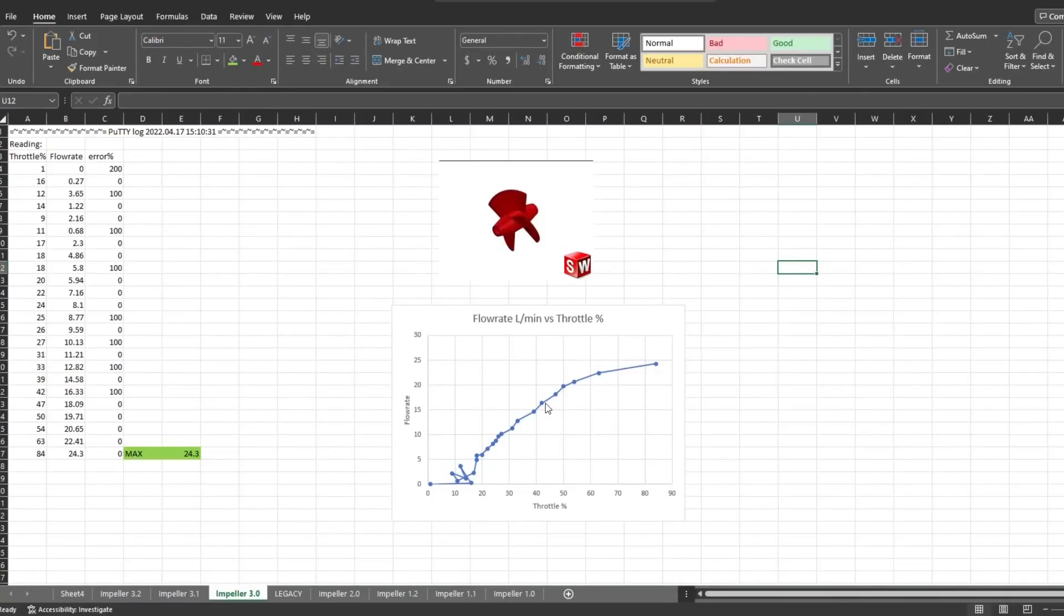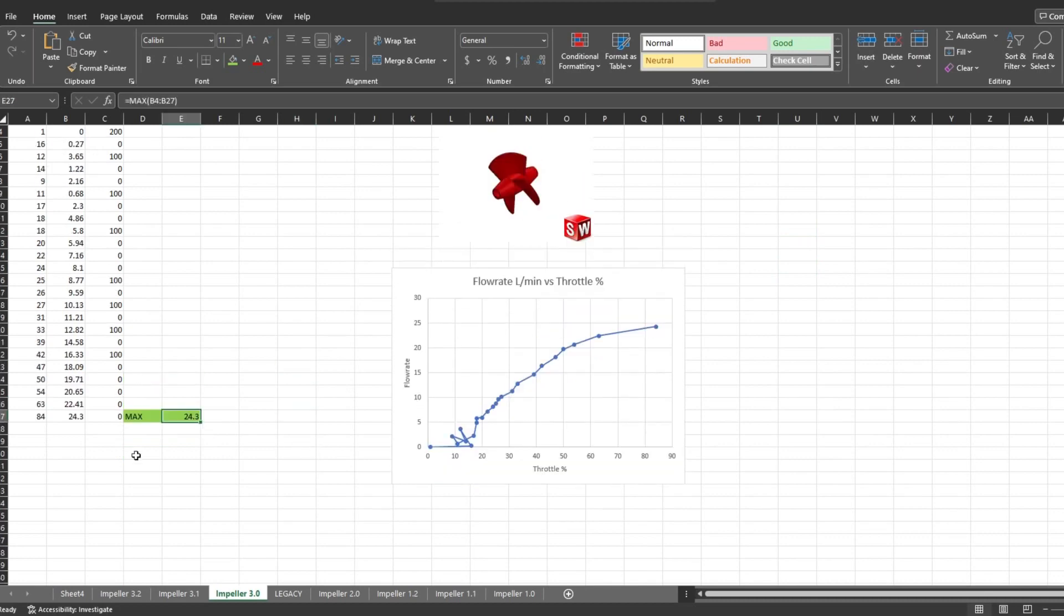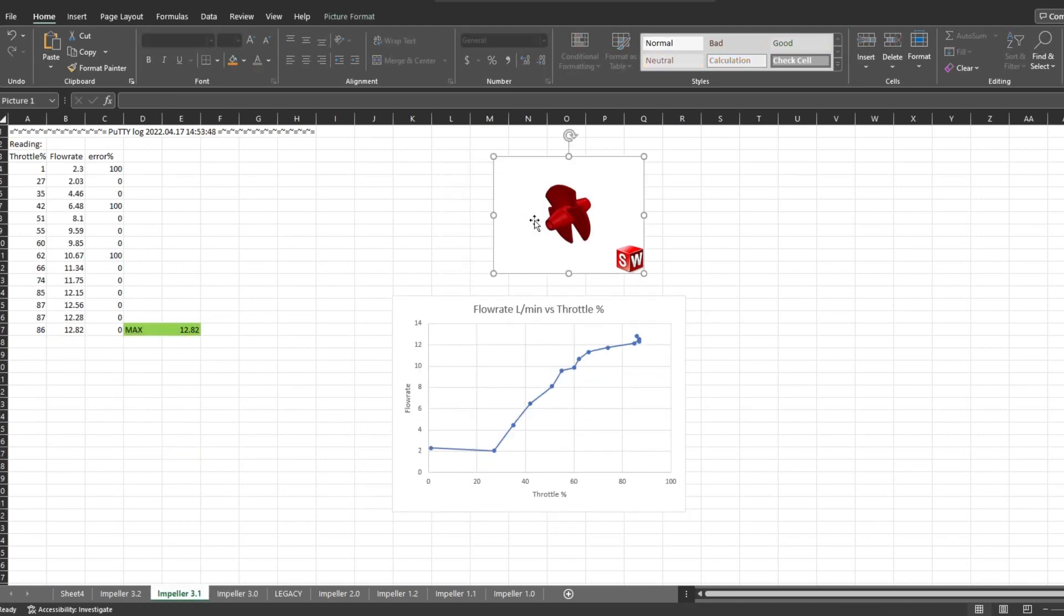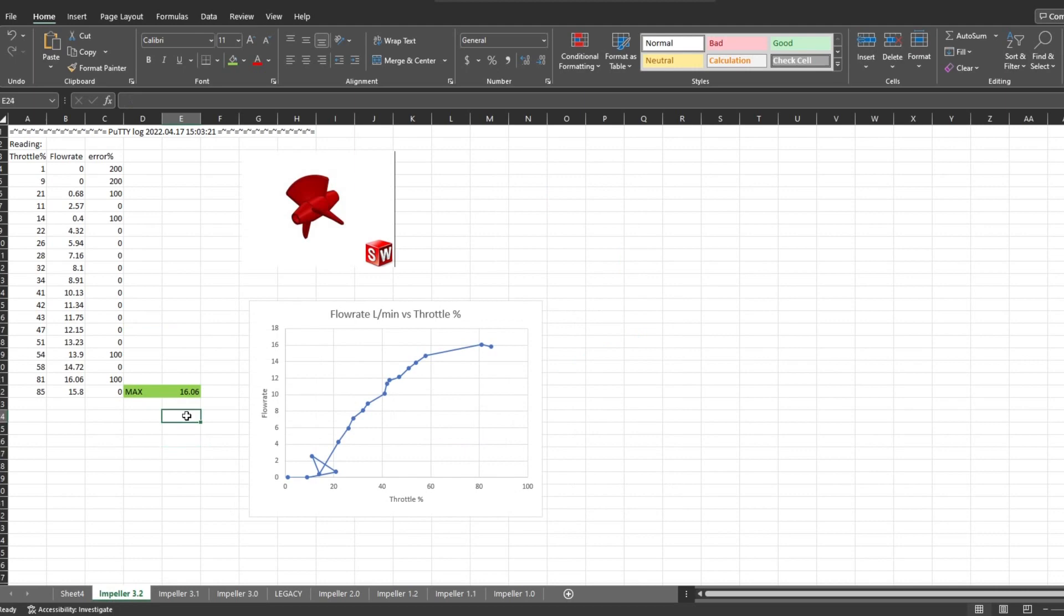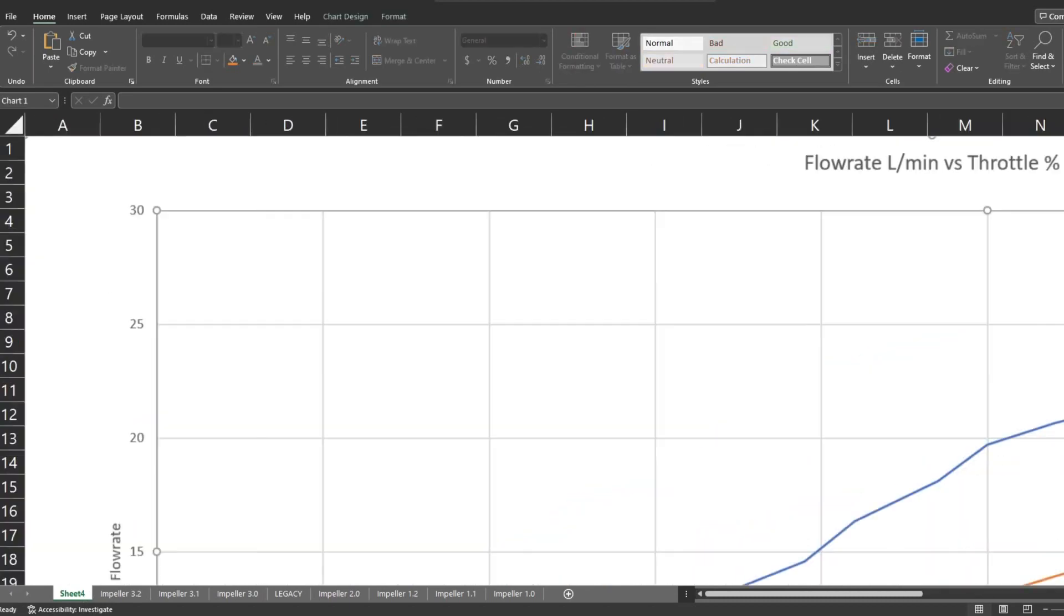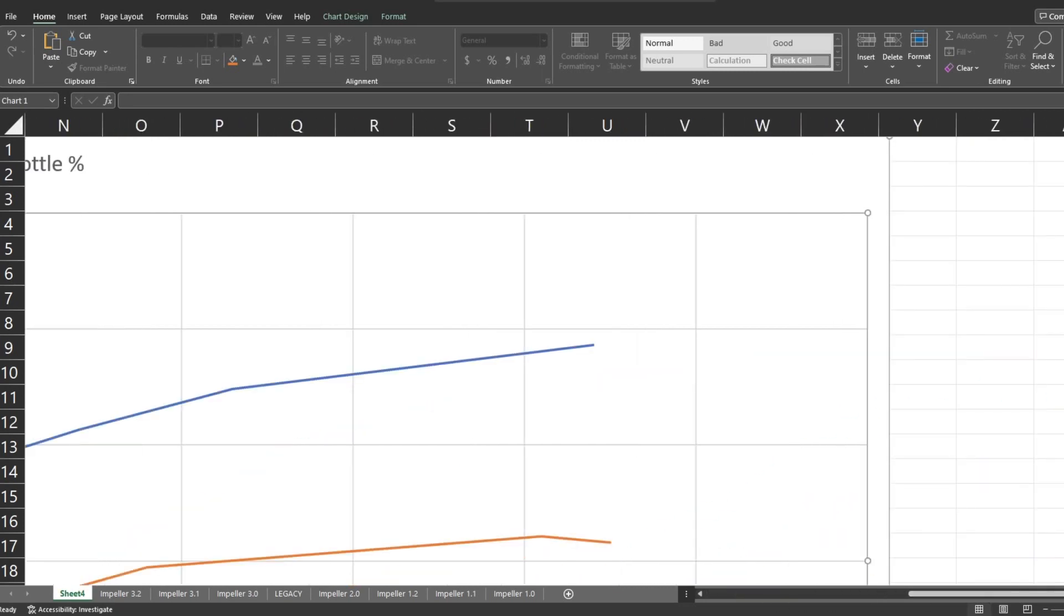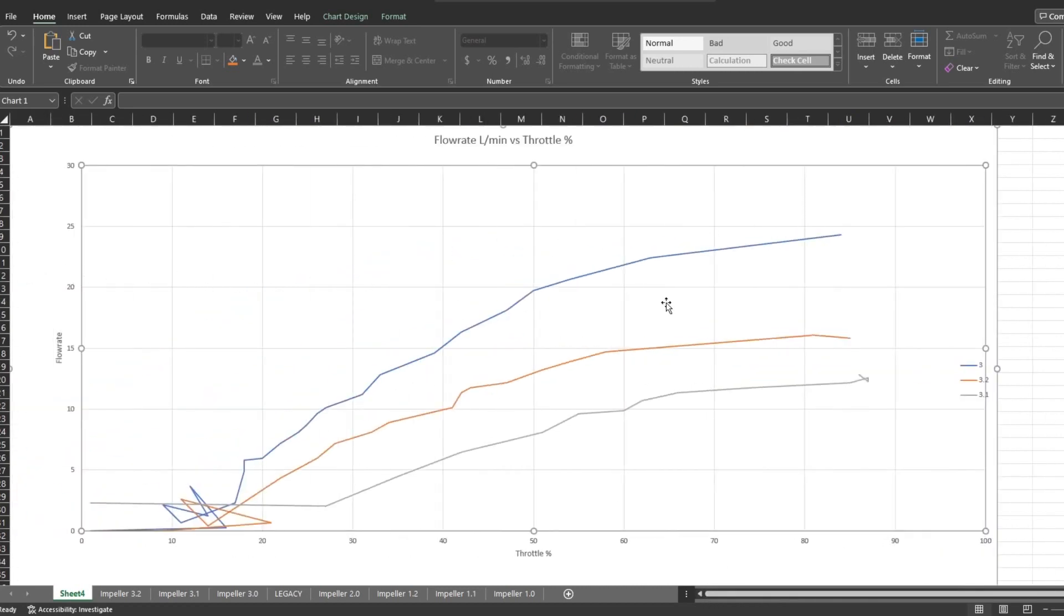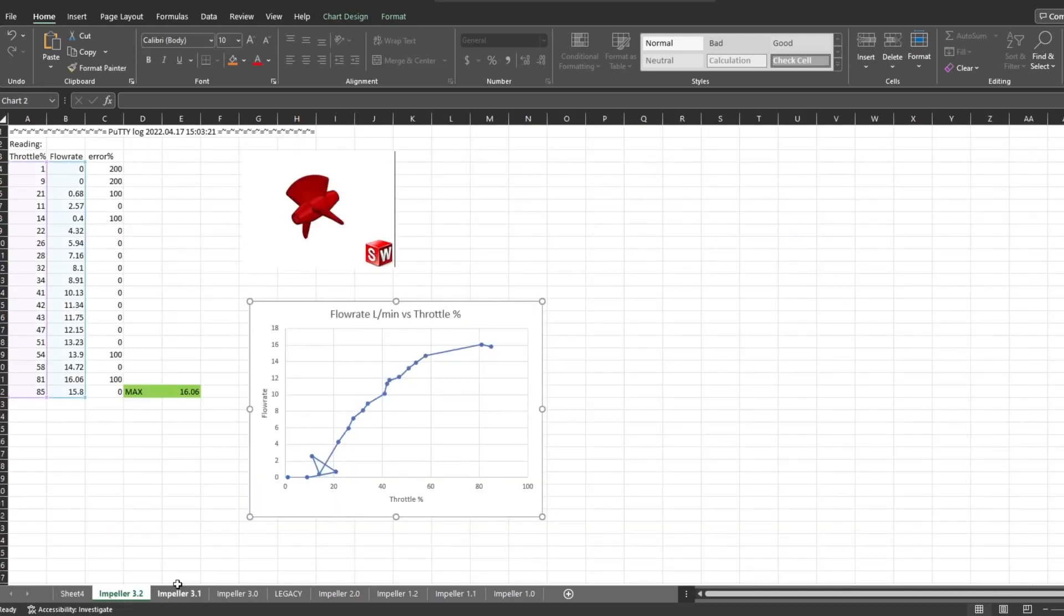But that doesn't stop us from looking at the data. As you can see here, this is the data for impeller 3.0. This is for impeller 3.1, the more pitched impeller, and that's the max achieved. This is for the low-pitch impeller, that's the max flow rate. This sheet shows all of them together on the same graph. We reached the maximum flow rate with impeller 3.0, the blue one, by a pretty significant margin. It looks like the more mid-pitch impeller is actually about right for this motor speed.